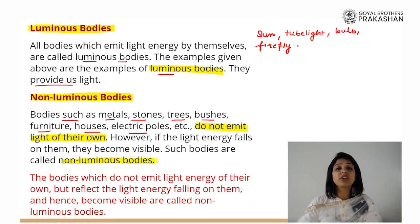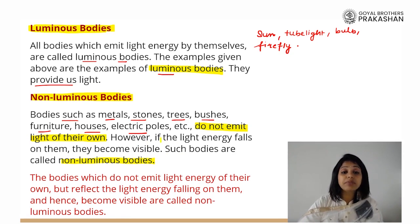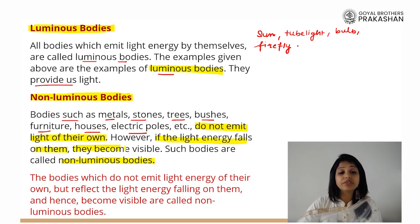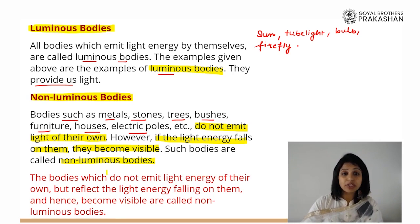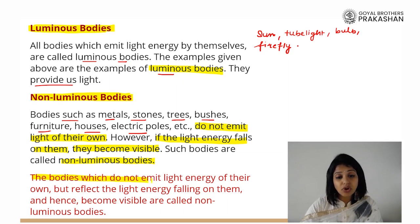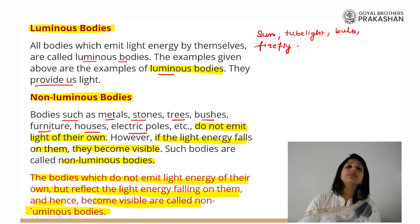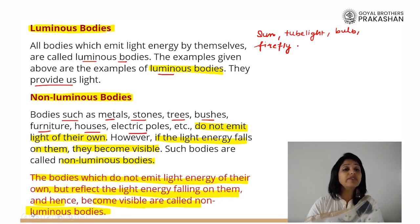Now the question comes: if they are non-luminous and they do not have their own light, how are we able to see them? We are able to see them because the light energy from a luminous body falls on the non-luminous body, which makes them visible. We are able to see an object only when the luminous body's light is falling on the non-luminous body. The bodies which do not emit light of their own but reflect the light energy falling on them are called non-luminous bodies.